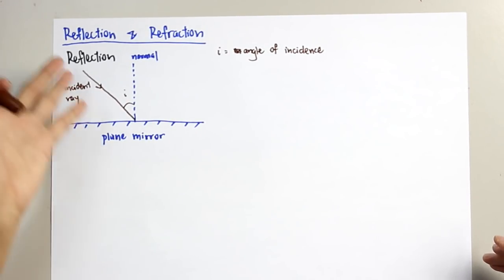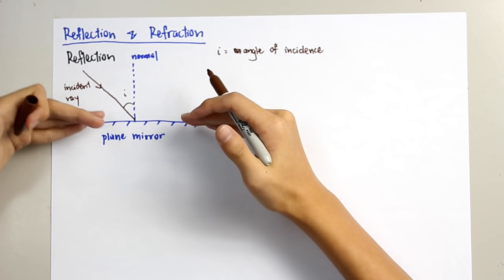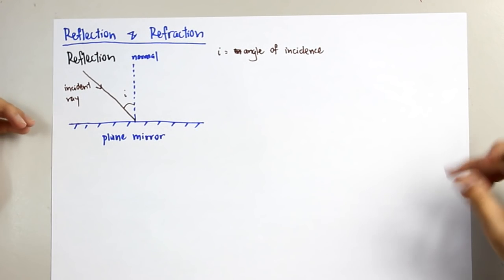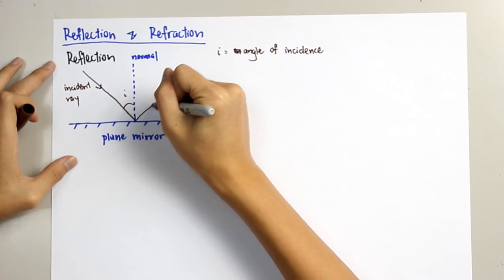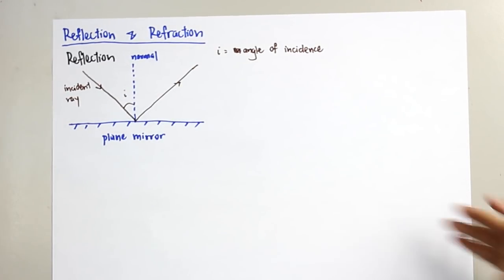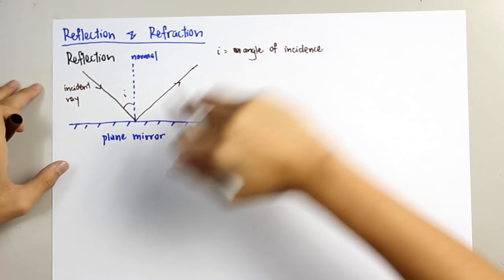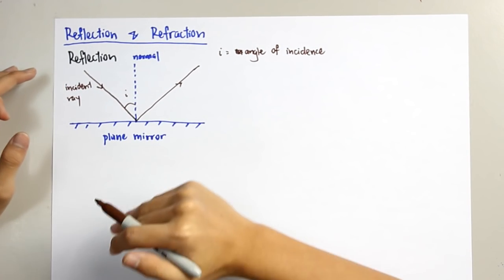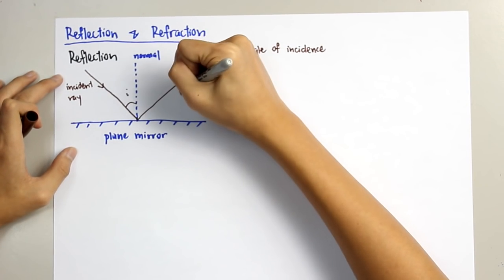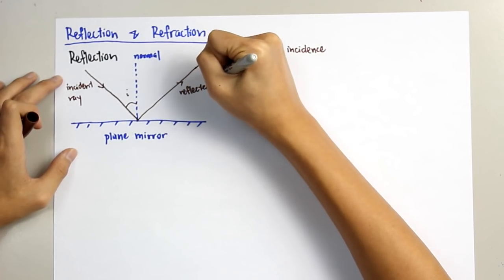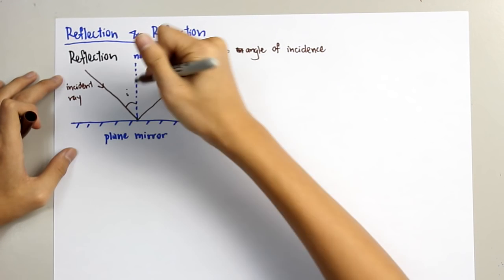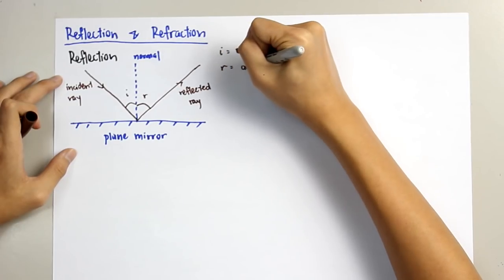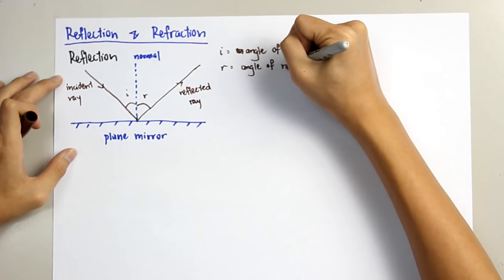When the incident ray is directed onto the plane mirror, we know that the mirror has a reflecting nature. So when the incident ray is directed onto the plane mirror, it will be reflected. The word 'reflected' means opposite direction — the ray travels from this direction to this direction. This ray we call the reflected ray. And the angle between the reflected ray and the normal, we call it the angle of reflection.